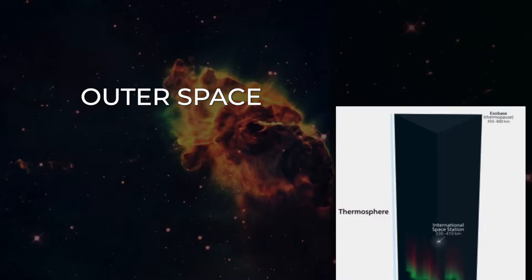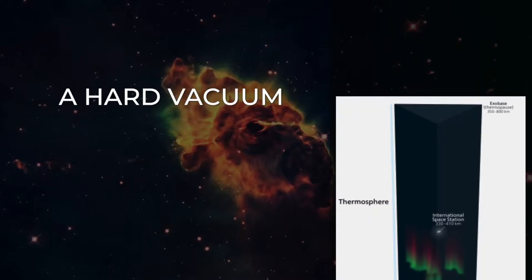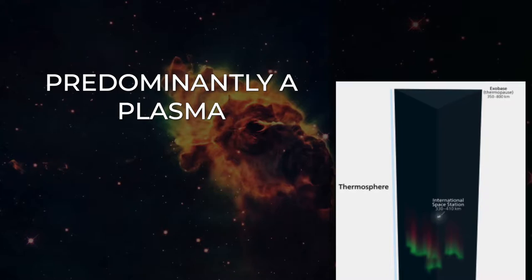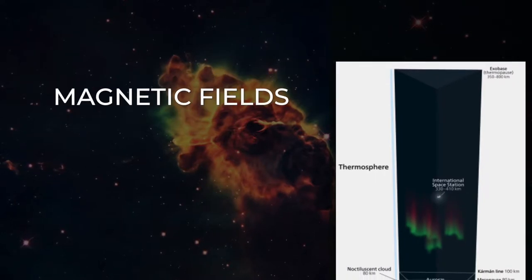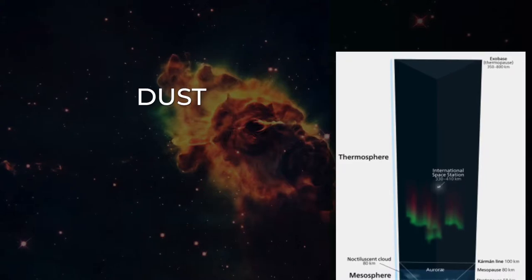Outer space is not completely empty. It is a hard vacuum containing a low density of particles, predominantly a plasma of hydrogen and helium, as well as electromagnetic radiation, magnetic fields, neutrinos, dust and cosmic rays.